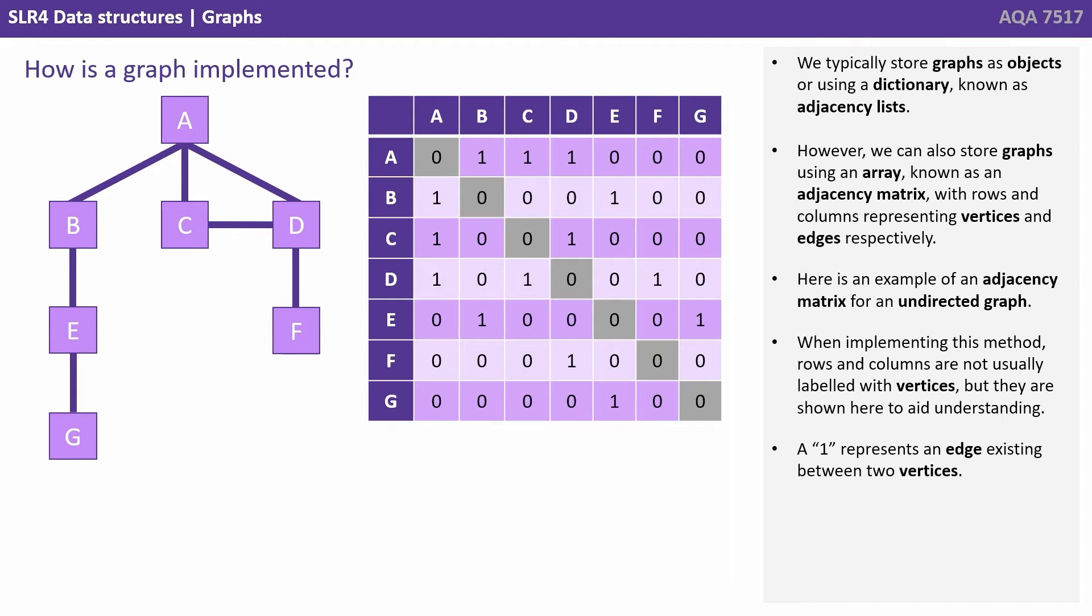We typically store graphs as objects or using a dictionary known as adjacency lists. However, we can also store graphs using an array known as an adjacency matrix, with rows and columns representing vertices and edges respectively. Here's an example of an adjacency matrix for an undirected graph.